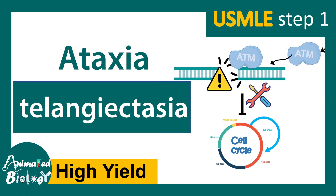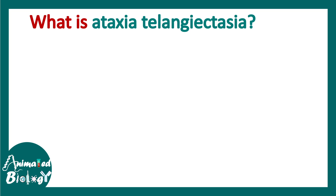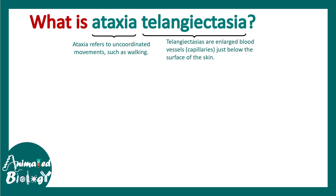In this video we'll talk about Ataxia Telangiectasia. This is for USMLE Step 1 and it's a high yield video. Ataxia Telangiectasia is one type of disorder that results in decreased T and B cell activity. Ataxia stands for uncoordinated movement and uncoordinated walking. Telangiectasia refers to blood vessels underneath the skin which look like spider-like vessels.